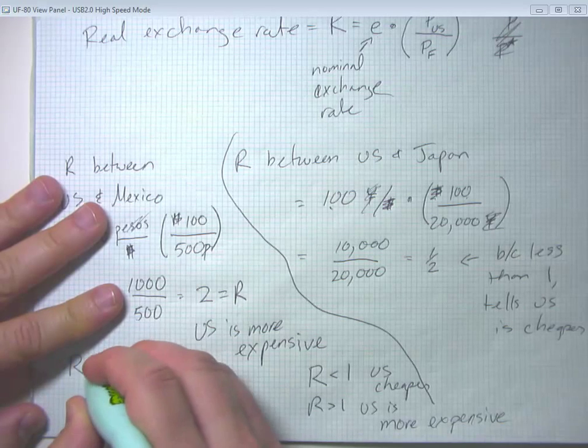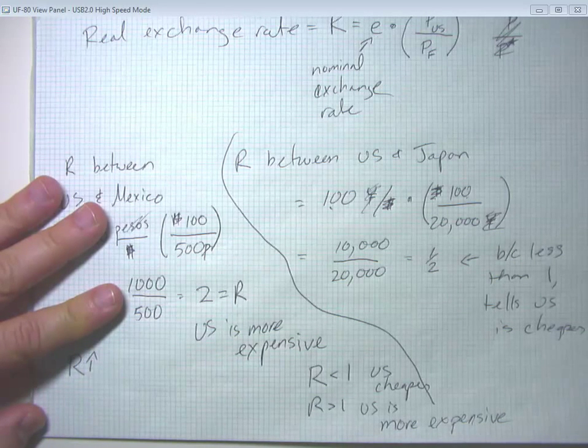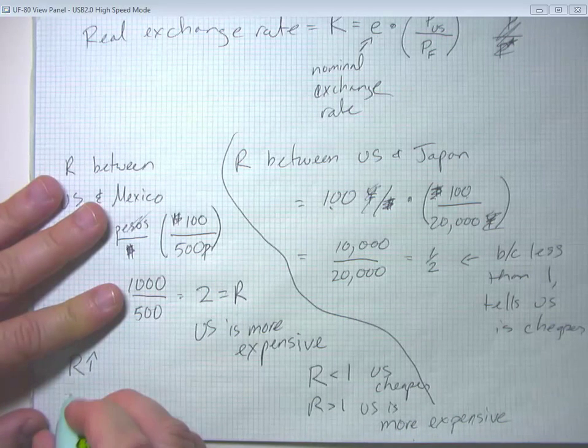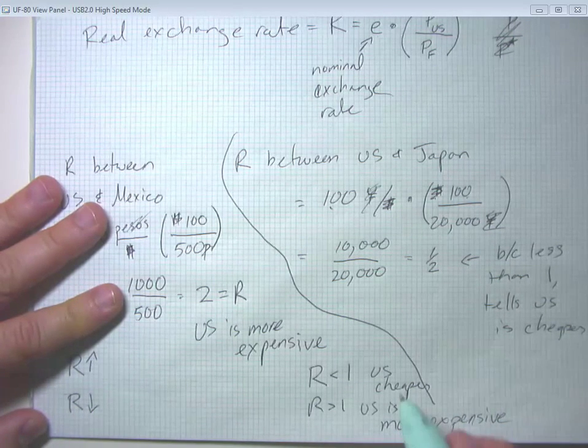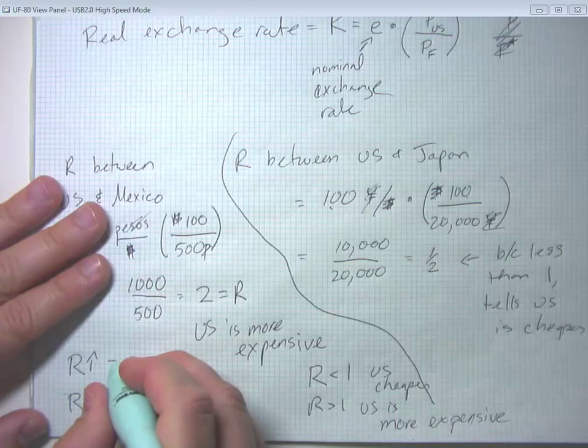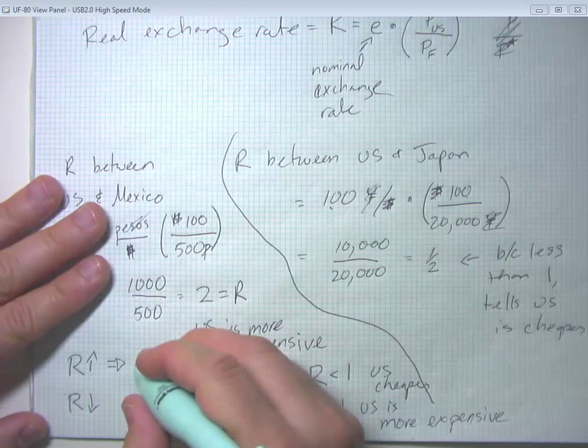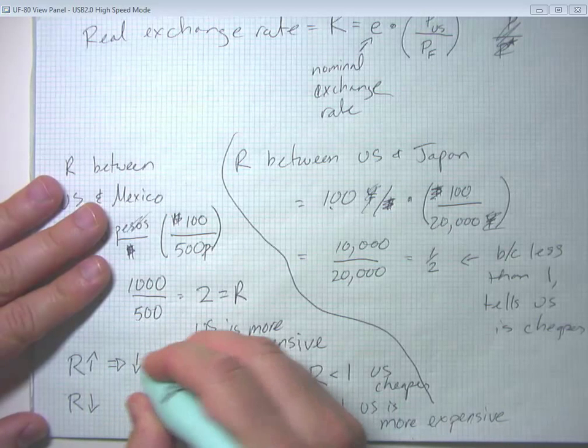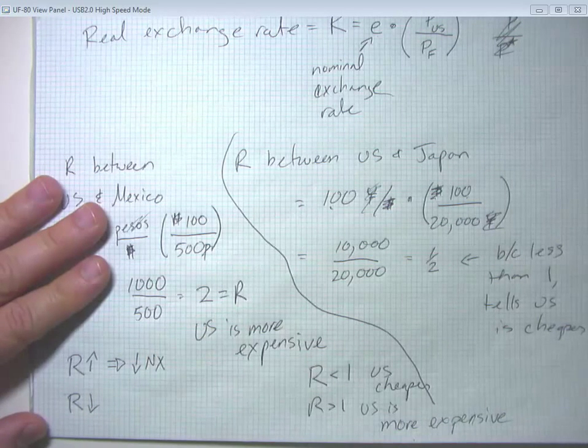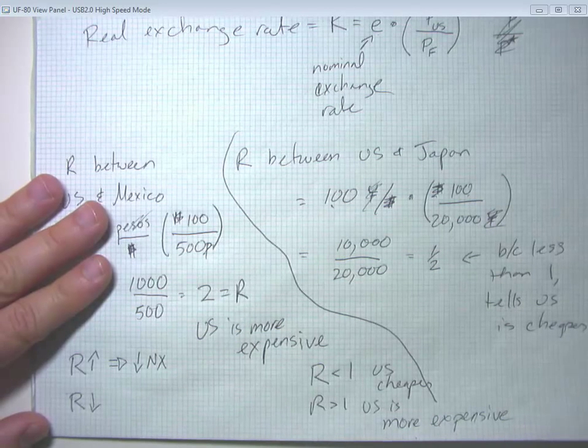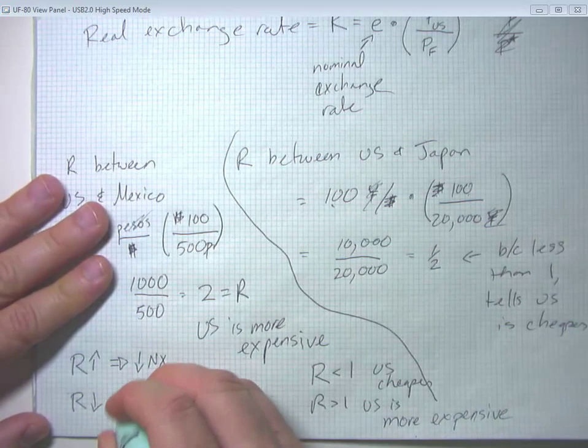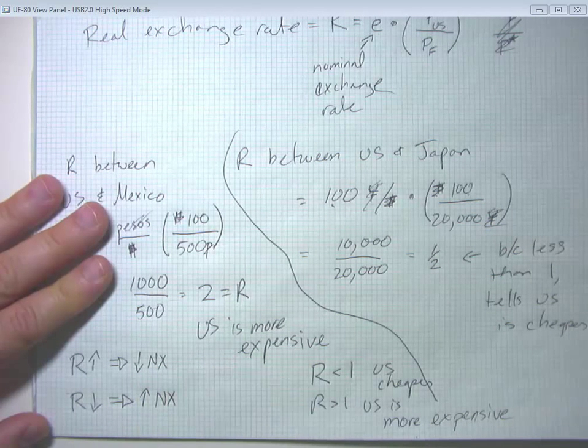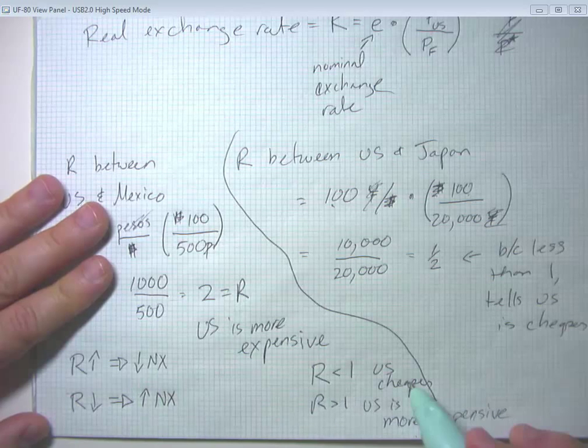When the real exchange rate goes up, then the US gets more expensive. If the real exchange rate goes down, the US gets cheaper. So the real exchange rate going up is typically going to mean net exports are going to fall. Because the US is getting more expensive relative to foreign destinations. And if the real exchange rate falls, that's going to mean net exports are going to typically rise. Because the US has gotten cheaper.